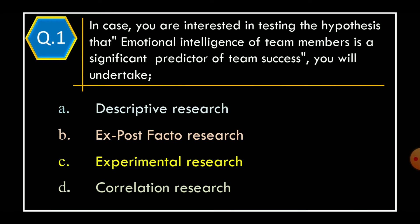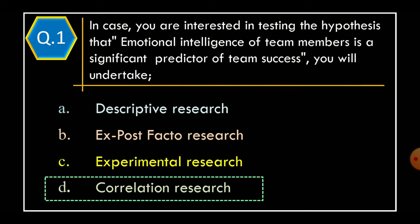In case you are interested in testing the hypothesis that emotional intelligence of team members is a significant predictor of team success, you will undertake: Option A, descriptive research; Option B, ex-post facto research; Option C, experimental research; Option D, correlation research. The correct option is Option D, correlation research.